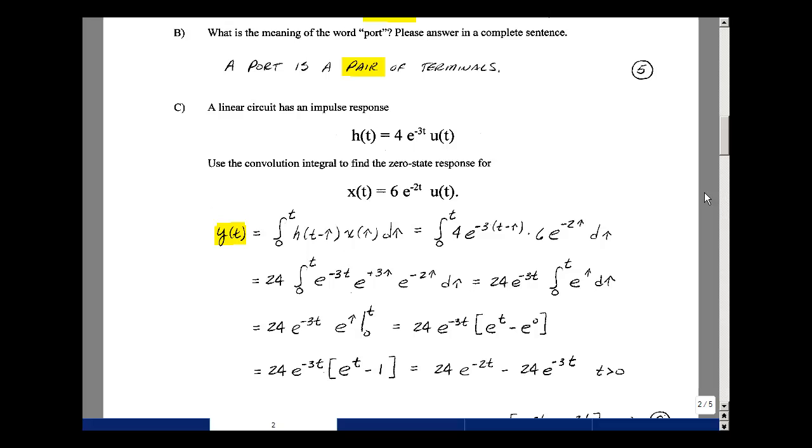Question c: given the impulse response h(t) = 4e^(-3t)u(t), can you use the convolution integral to find the zero state response if x(t) = 6e^(-2t)u(t)? If you recall from chapter 11, the convolution integral is y(t) equals the integral from 0 to t of h(t - τ) times x(τ) dτ.